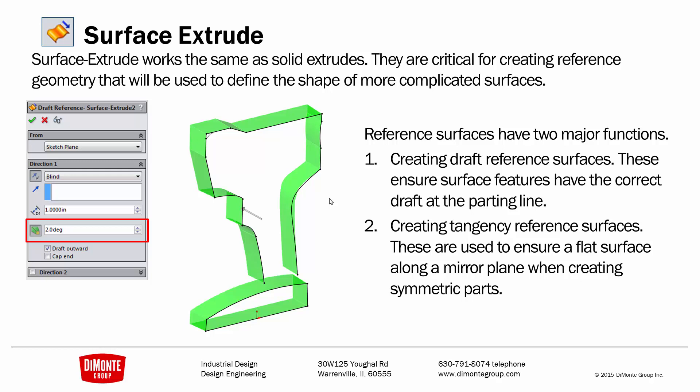The second use of a reference surface is when mirroring one half of a symmetric part. Instead of adding draft, we'll just extrude this straight out. Any surface that creates the mirror plane will be made tangent to this reference surface. That's to ensure that there's no spike or dip when we mirror the two halves of the model.